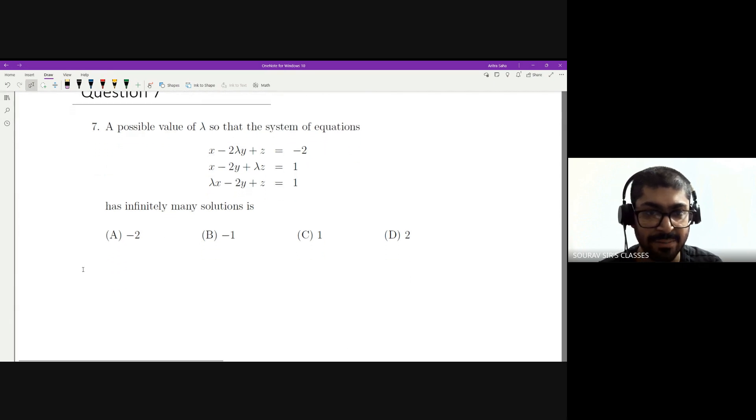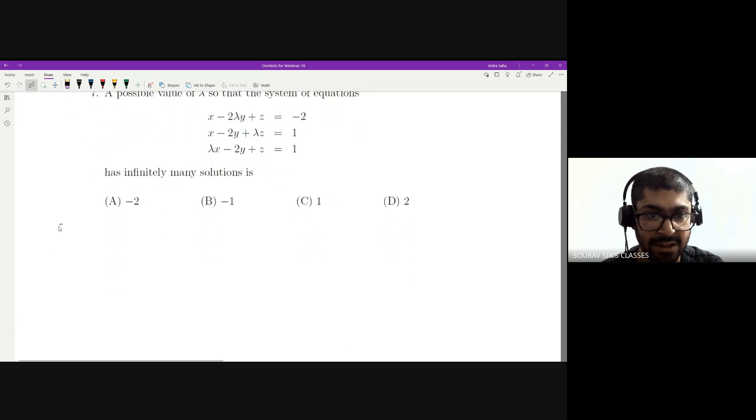If we consider the coefficient matrix, building the coefficient matrix, you just take the value of the coefficients. Name it A. So that will be 1, 1, lambda, and then I have -2, lambda, -2, -2, then I have 1, lambda.